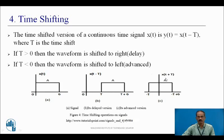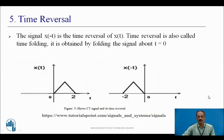Similarly, if T is negative, then x(t − (−T)) becomes x(t + T), which is an advance or shift towards the left. The 0 point shifts to −T and the second point shifts to −T + 6. Time reversal: the signal x(−t) is the time reversal of x(t), also called time folding. It is obtained by folding the signal about t = 0. For x(t) varying from 0 to 2, x(−t) is exactly the mirror image, so +2 becomes −2.